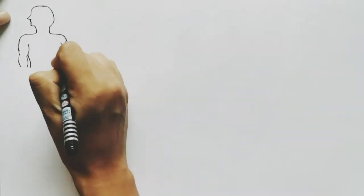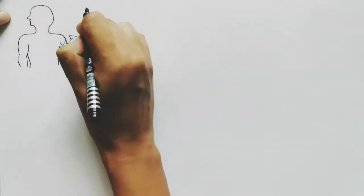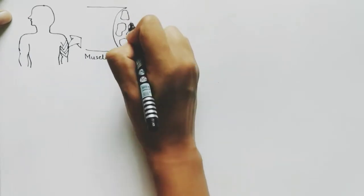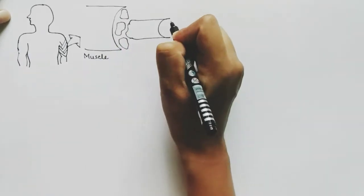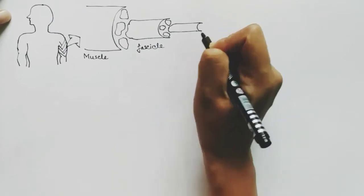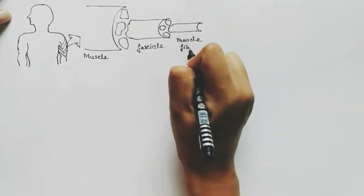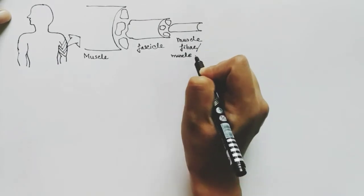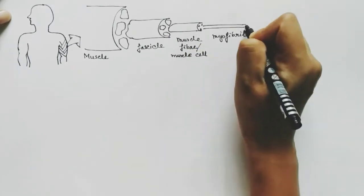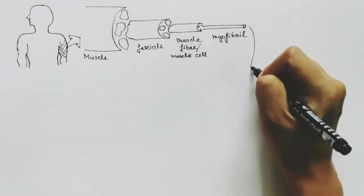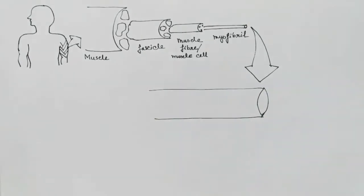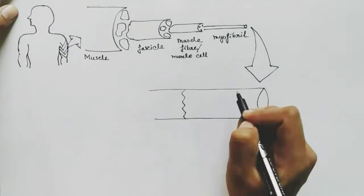This is the Part 1 video of muscle contraction. In order to understand muscle contraction, we have to understand the structure of the muscle. A muscle is the organ which is composed of a bunch of fascicles, and one fascicle contains a bunch of muscle fibers or muscle cells, and one muscle cell contains a bunch of myofibrils.